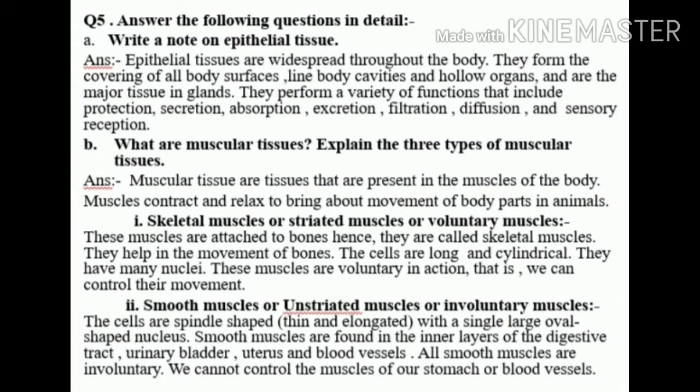Number 8b: What are muscular tissues? Explain the three types of muscular tissues. Answer: Muscular tissues are the tissues that are present in the muscles of the body. Muscles contract and relax to bring about the movement of body parts in animals. Number one: Skeletal muscles, or striated muscles, or voluntary muscles.